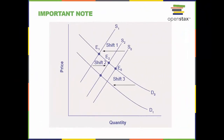One important note: a shift in one curve never causes a shift in the other curve. Rather, a shift in one curve causes a movement along the second curve. A shift in supply does cause a resulting change in quantity demanded along the demand curve. Unless a separate force is simultaneously forcing the demand curve to shift, forces shifting supply should be limited to supply curve shifts only.